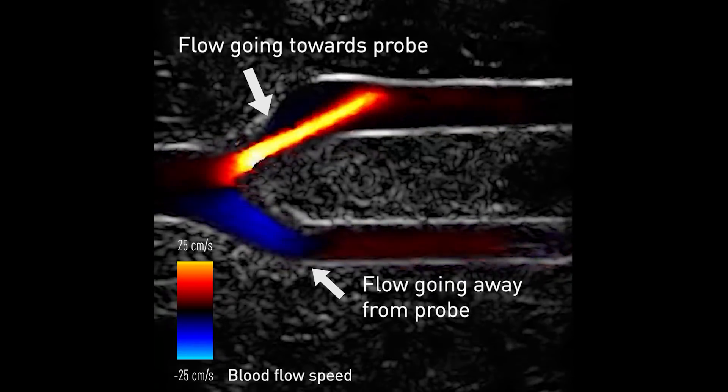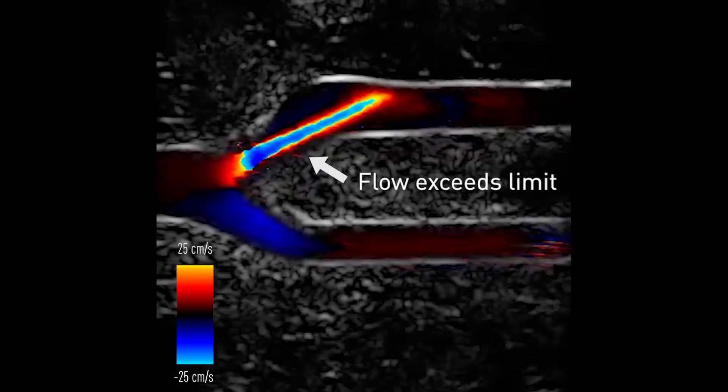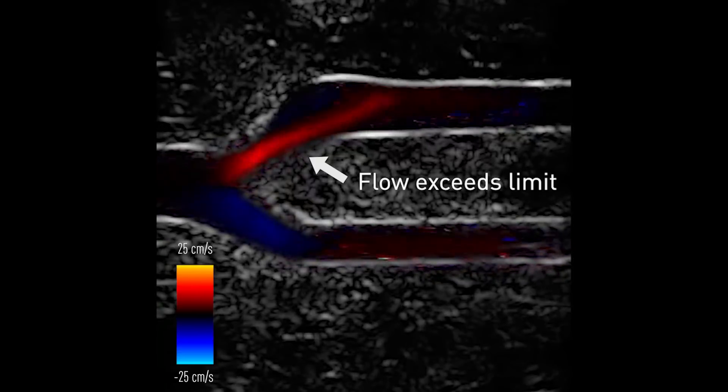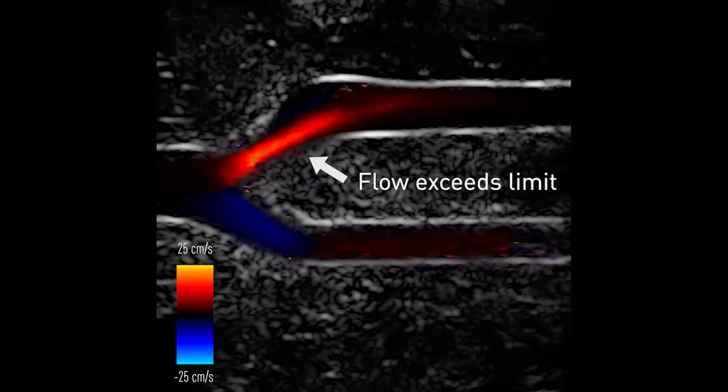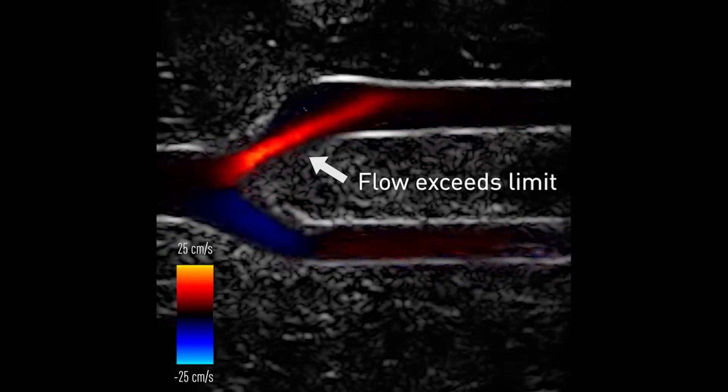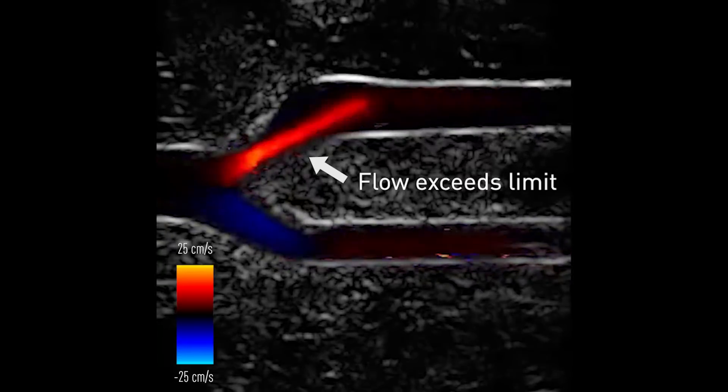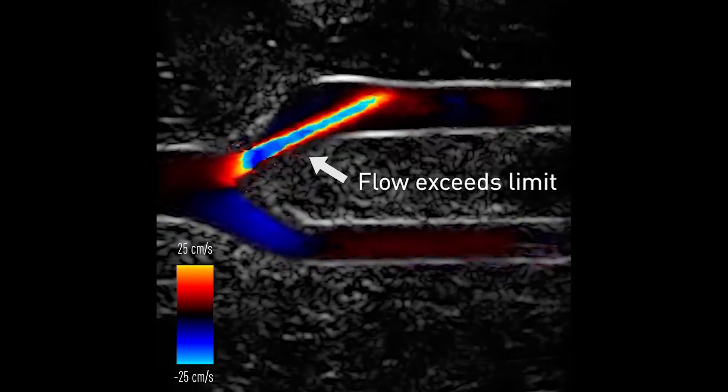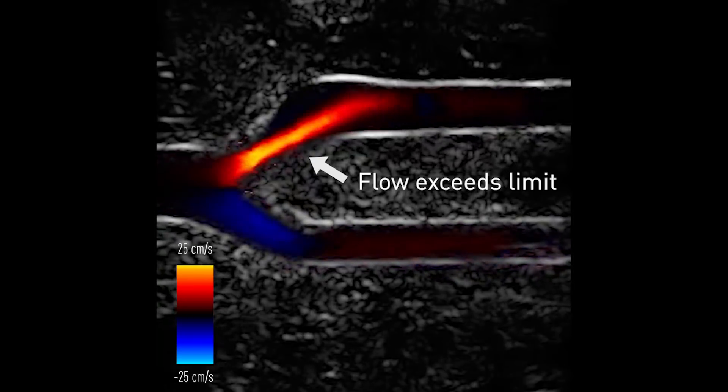Or at least they're supposed to. In the image on screen, blood in the upper branch is moving up towards the probe and should be colored red. But when blood is moving very quickly, it can actually exceed the rate at which existing instruments can correctly determine the speed. This causes what's called aliasing, and the color code switches from red to blue, incorrectly indicating that the blood is moving in the opposite direction.